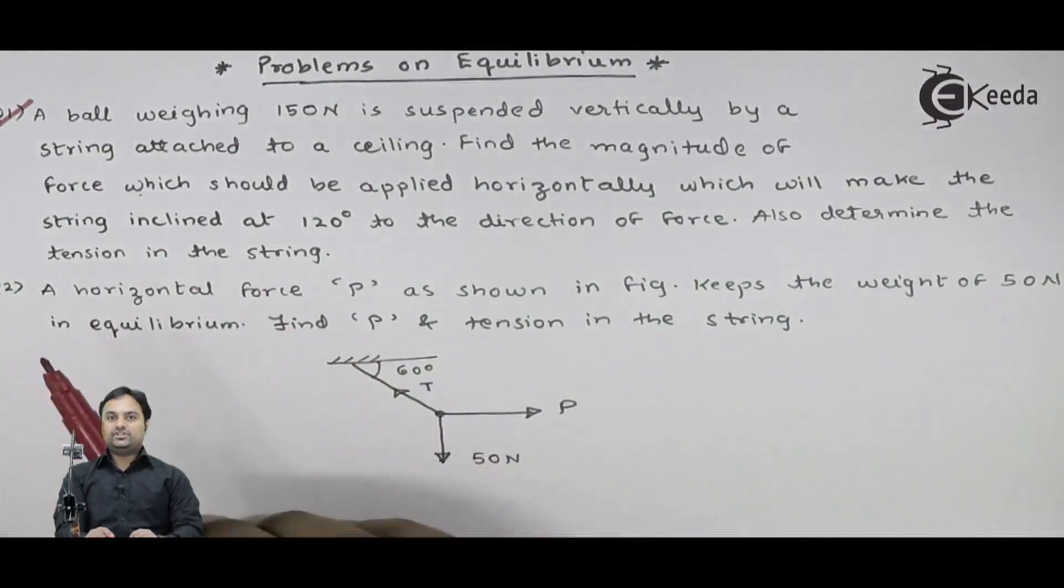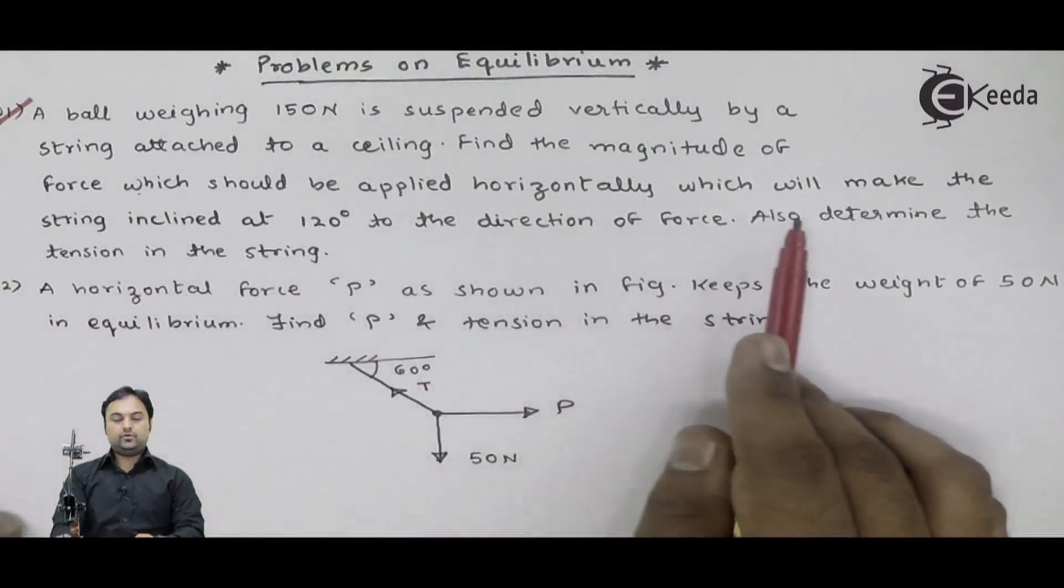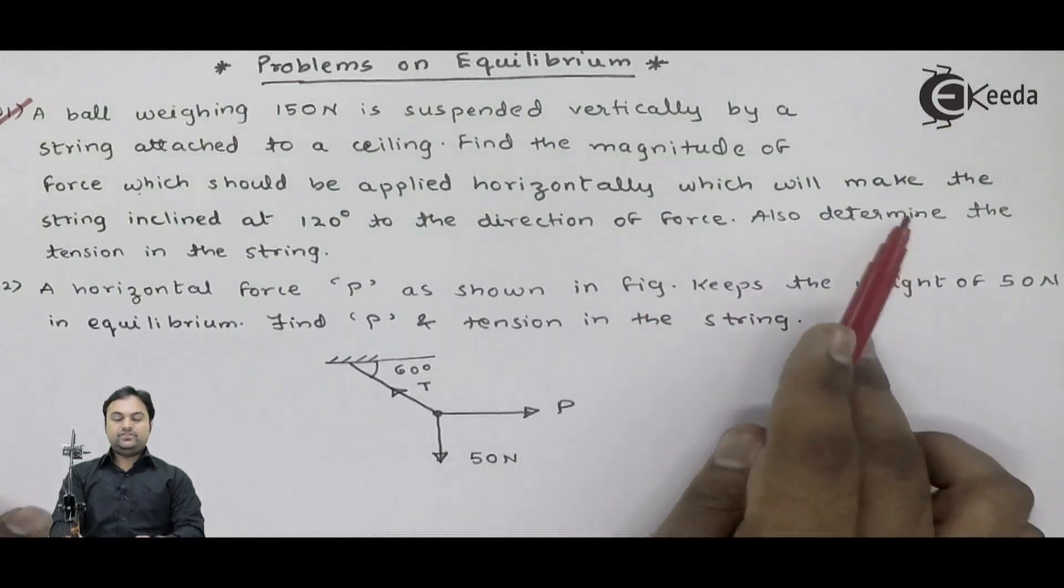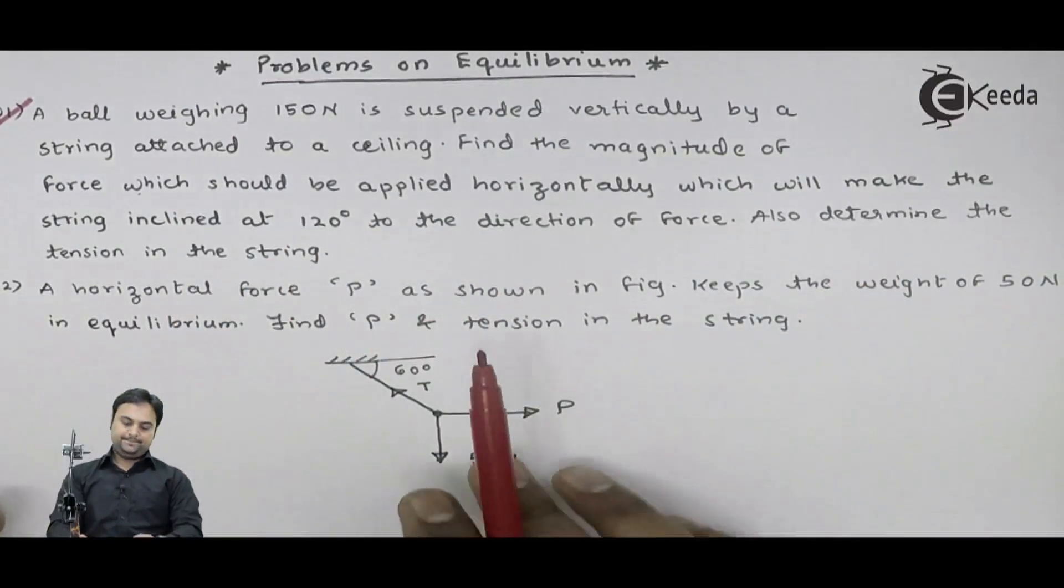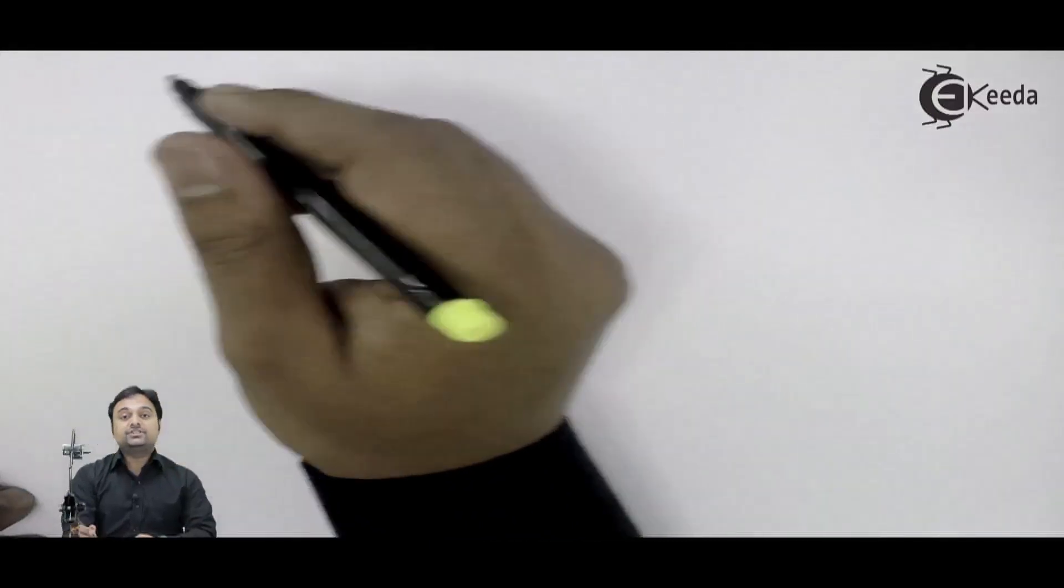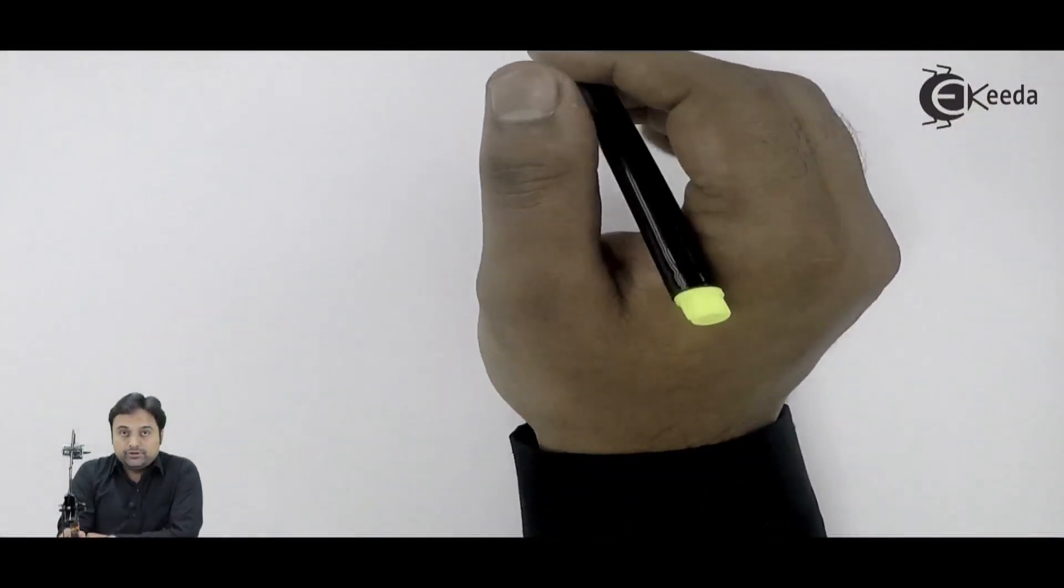Now, they have mentioned some conditions in the question. With the help of these conditions, we would be writing the data because that conditions will help us to draw the diagram.